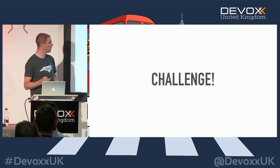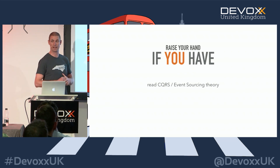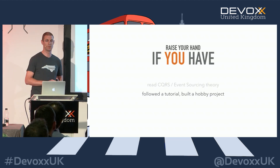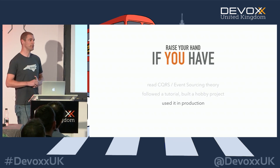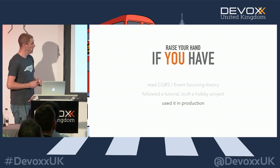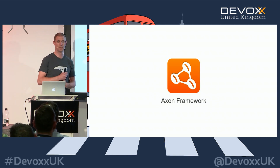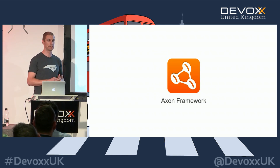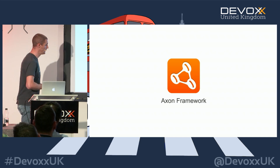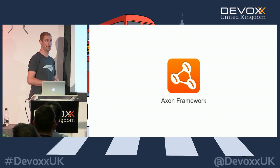Before we get going, I'd like to talk about you first. Please raise your hand if you have any experience with CQRS event sourcing theory. Okay, that's over half the audience. Has anybody followed a tutorial or built a hobby project around event sourcing? And who has used it or is currently using it in production? About 10 to 15% of the audience. I may insert some code examples, mostly based on the open source framework Axon, which was featured in a workshop here at DevOx. I'm not affiliated with Axon, but it's one of the more popular frameworks in the CQRS event sourcing domain — a Java or JVM framework.